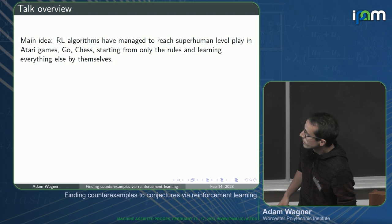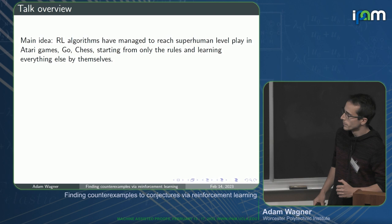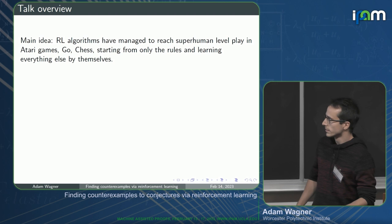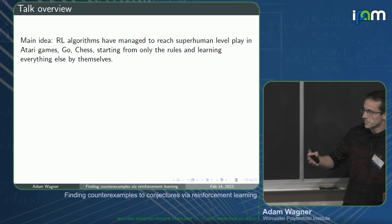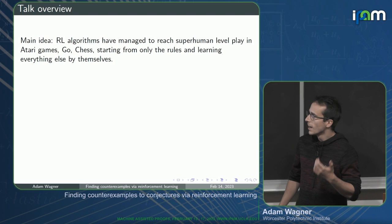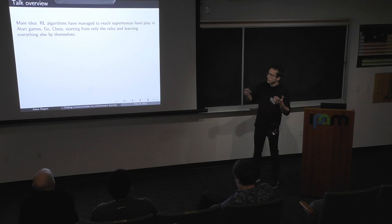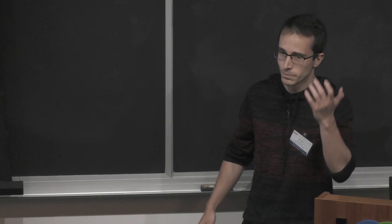Reinforcement learning (RL) is the key concept here. These programs started from knowing essentially nothing about the games - only the rules - and figured out everything else just by playing many, many times by themselves. So given the success of these self-learning algorithms, how nice would it be if you could find a way to use them in mathematics as well? You could try to input some kind of mathematical program and tell the RL algorithm to get good at solving that problem.